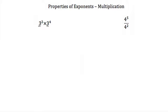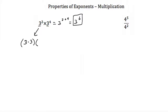So if we have 3 squared times 3 to the fourth, this is equal to 3 to the 2 plus 4 power, or 3 to the sixth power. This is because 3 squared is 3 times 3, and then we multiply by 3 to the fourth, which is 3 times 3 times 3 times 3. All these 3's are multiplied together, giving us 6 threes, so our answer is 3 to the sixth power.